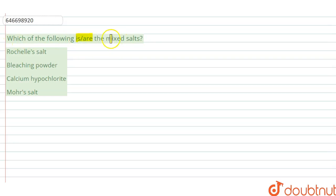of the following is or are the mixed salts? Options are Rochelle salt, bleaching powder, calcium hypochlorite, Mohr's salt. So in the question we are given some salts and